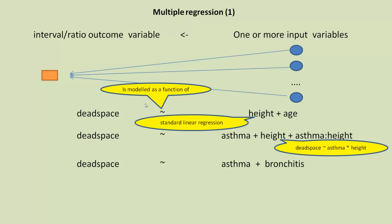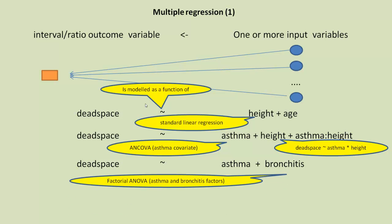So we have standard linear regression because both those independent variables, or input variables rather, are interval ratio. Then we have here an ANCOVA style multiple regression because asthma is a covariate, it's nominal data. And here we have two nominal variables, so it's a particular type of ANOVA called factorial ANOVA, which we'll talk about in another YouTube video. But we'll analyze it using regression, which is fine in this tutorial.